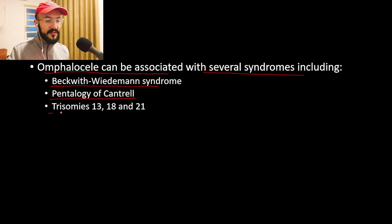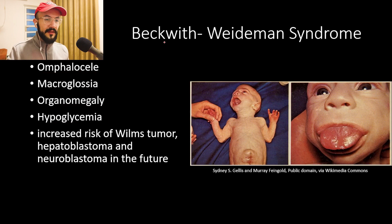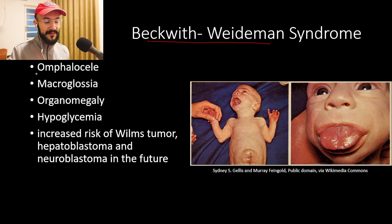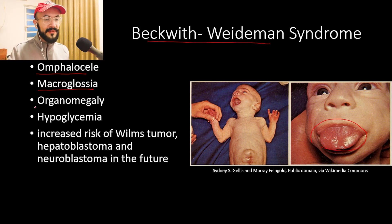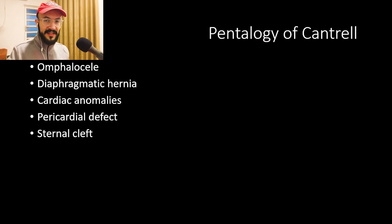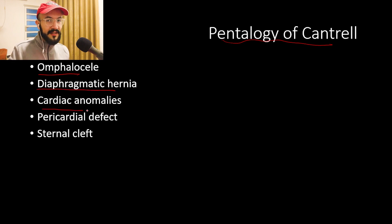Omphalocele can be associated with several syndromes including Beckwith-Wiedemann syndrome, pentalogy of Cantrell, and trisomies 13, 18, and 21. Beckwith-Wiedemann syndrome includes findings like omphalocele, macroglossia (a large tongue), organomegaly, and hypoglycemia, with increased risk of Wilms tumor, hepatoblastoma, and neuroblastoma. Pentalogy of Cantrell includes five findings: omphalocele, diaphragmatic hernia, cardiac anomalies, pericardial defect, and sternal cleft.